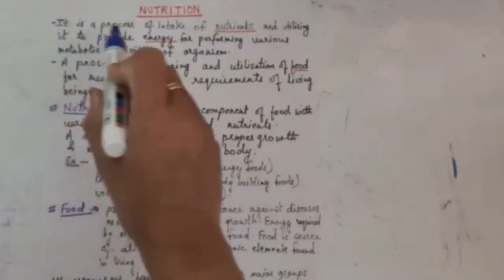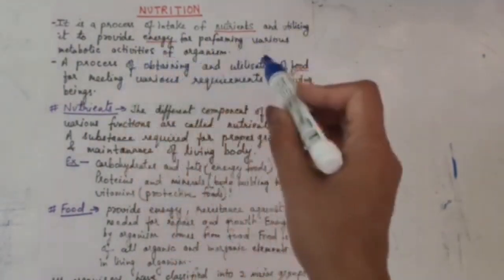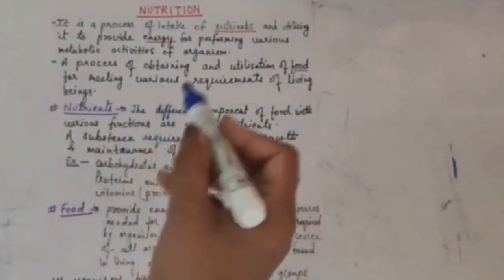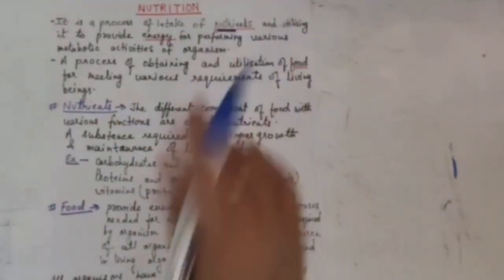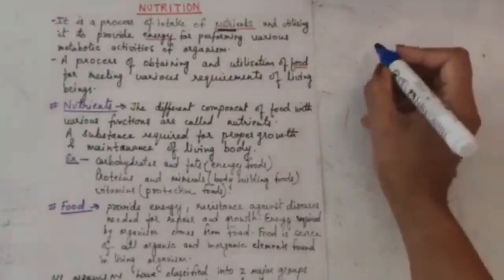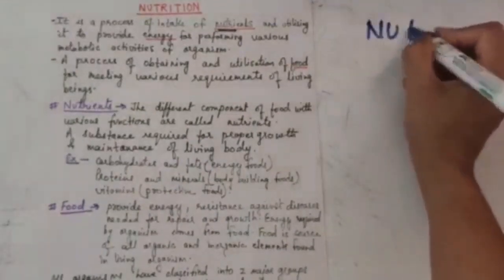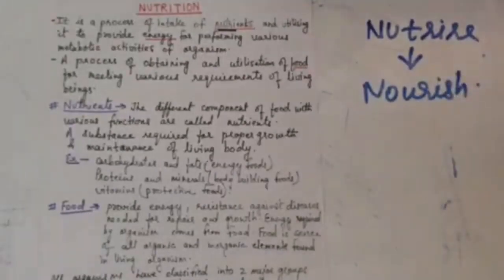It is written here, it is a process of intake of nutrients and utilizing it to provide energy for performing various metabolic activities of organisms. A process of obtaining and utilization of food for meeting various requirements of living beings. Now what are the nutrients? Nutrients are different components, they are the different components of food with various functions. This nutrition is derived from the word nutrients which means to nourish. Hence we can say it is a process of obtaining and utilization of food for meeting any of the requirements. Nutrients, any component of the food we can take, that is carbohydrates, proteins, minerals.